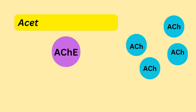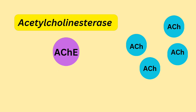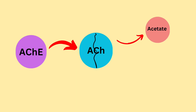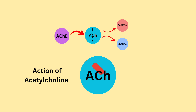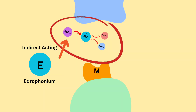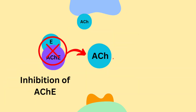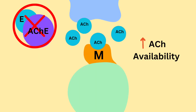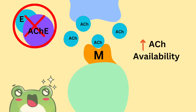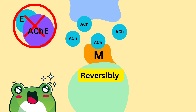Before going through the mechanism, we need to know about the enzyme acetylcholinesterase. It breaks acetylcholine into acetate and choline, leading to the termination of acetylcholine's action. Our indirect acting cholinergic drugs interact with and inhibit acetylcholinesterase, preventing the breakdown of acetylcholine, and hence indirectly increasing acetylcholine availability at the receptors. They can bind reversibly or irreversibly.